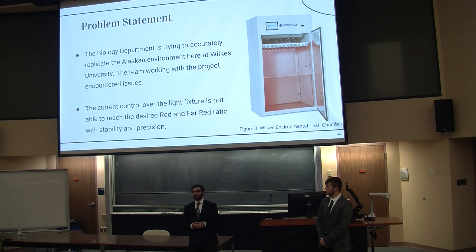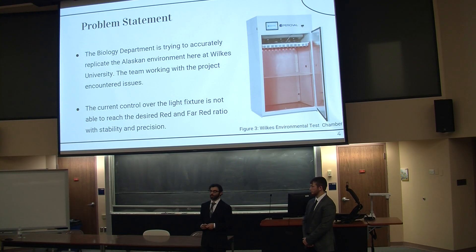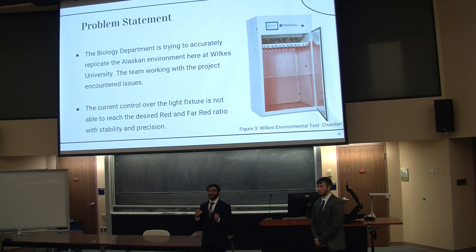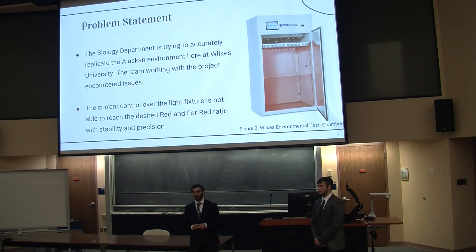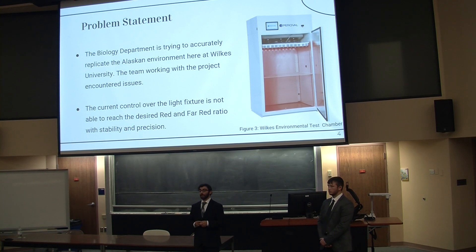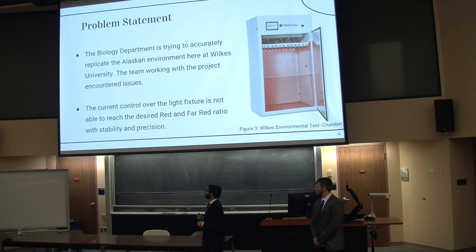The biology department team wanted to recreate the environments they studied here at the university. In order to do so, they leased environmental control chambers. This was done primarily for two reasons. The first is that 18-week cycle — that's a long time to wait an entire year to study again; being able to run the experiment over and over helps drastically. Another reason is to control the variables: through the chambers, they can control the temperature, humidity, and light. While conducting their study, they ran into an issue — they were not able to control a specific part: the far red ratio.